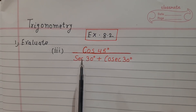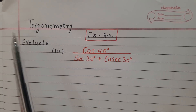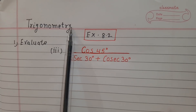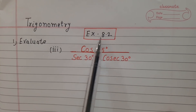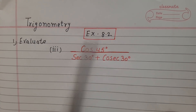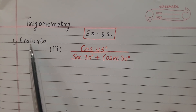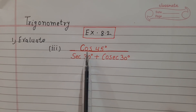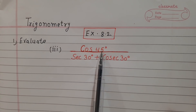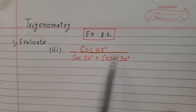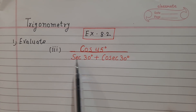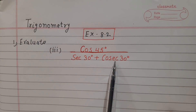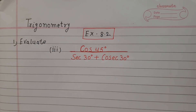Hello viewers, today we will solve chapter trigonometry exercise 8.2, question number 1, part 3, which is cos 45 degrees divided by sec 30 degrees plus cos 30 degrees.